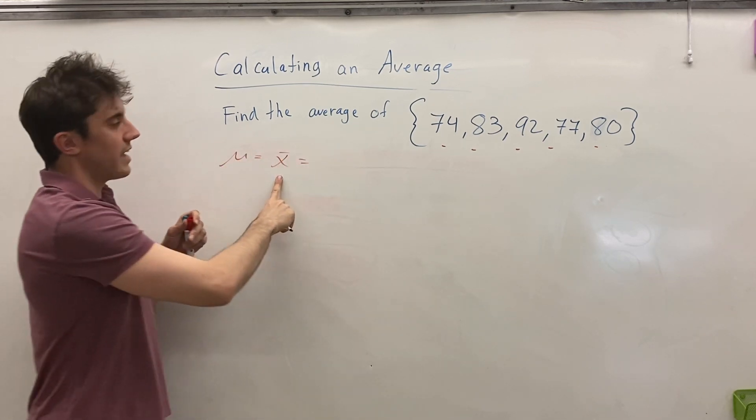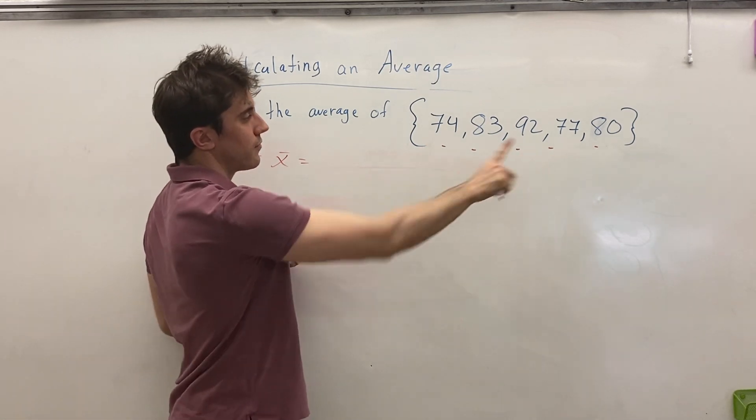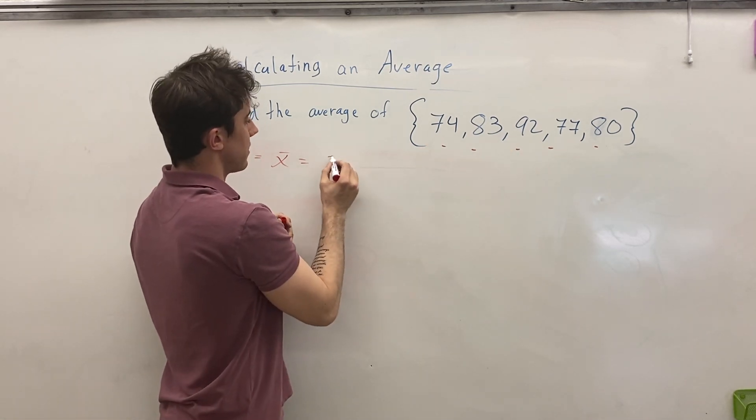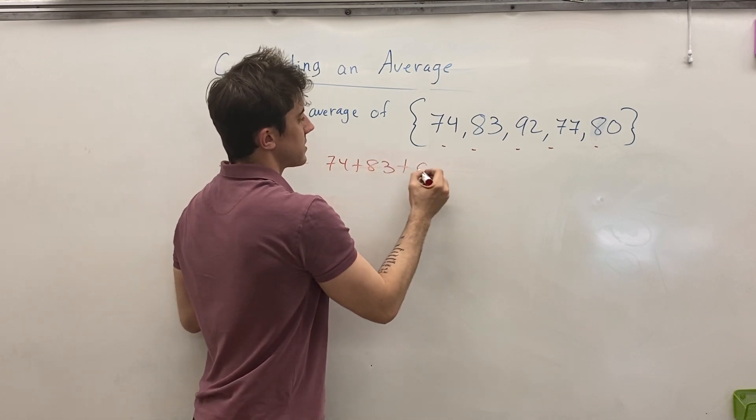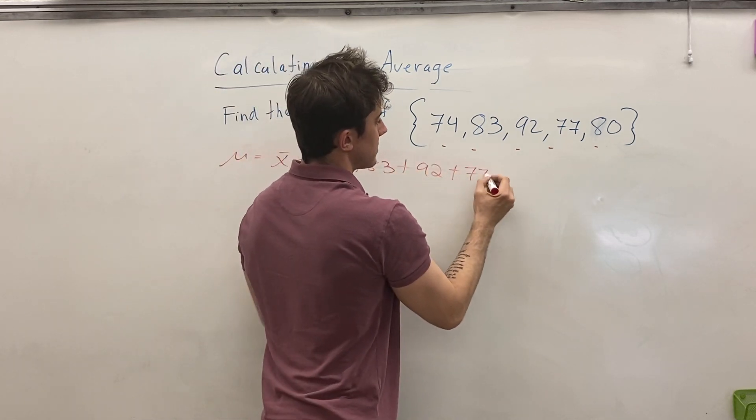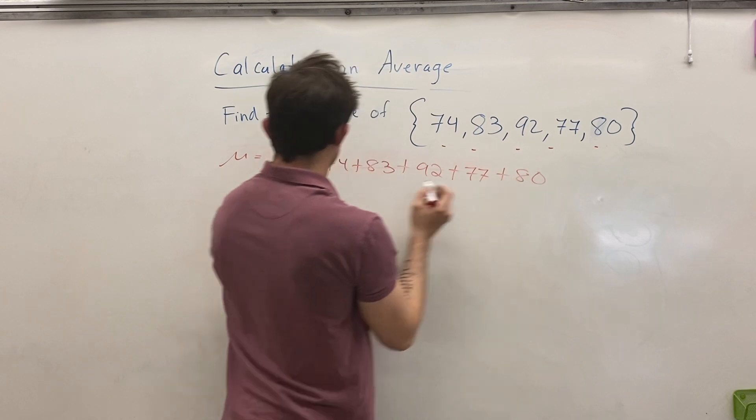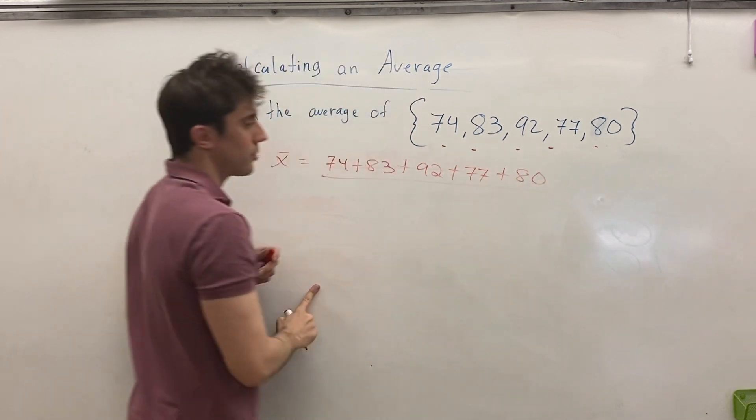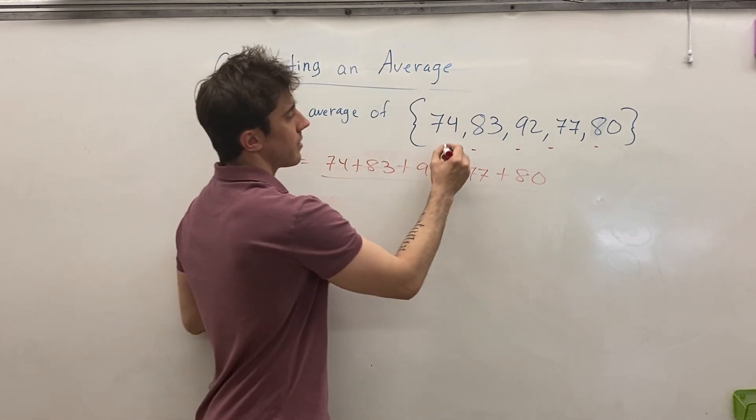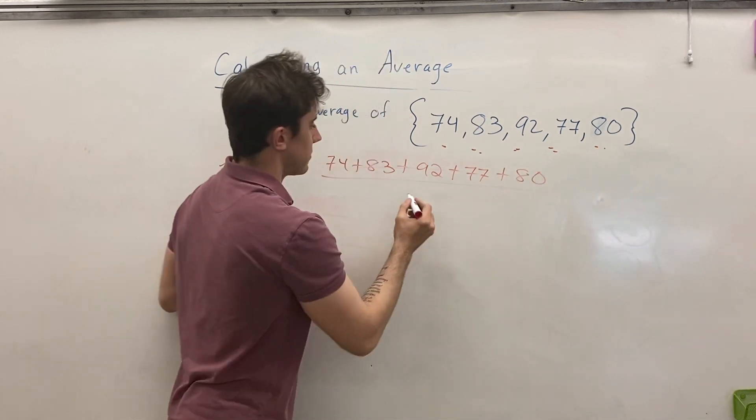So the average is going to be the sum of all five data points, i.e., 74 plus 83 plus 92 plus 77 plus 80, and we're going to divide that total by the number of data points in the set, and that means five.